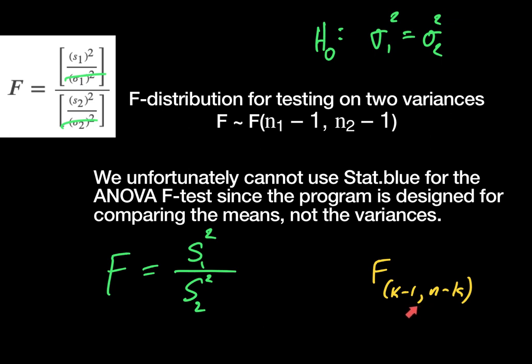When we did the sorority ANOVA question there were 20 women and four sororities, so it was 4 minus 1 = 3 and 20 minus 4 = 16. For comparing variances, it goes back to two data sets: first data set n-minus-1, second data set n-minus-1. The F-test has two different degrees of freedom, and you need to remember those to use the applets. Unfortunately, StatBlue does not have the F-test for variances — it has the F-test for one-way ANOVA, but not for this type of hypothesis test.